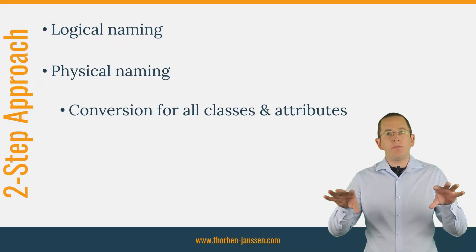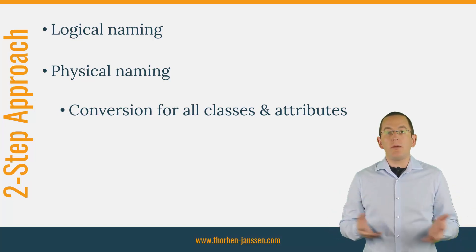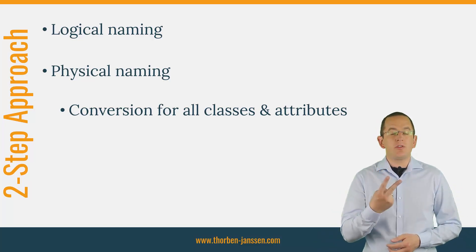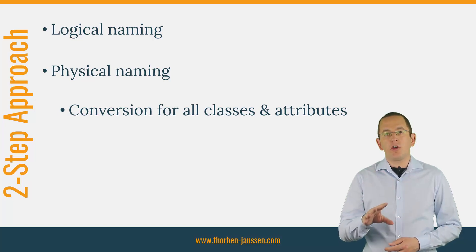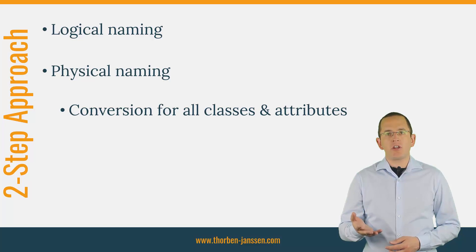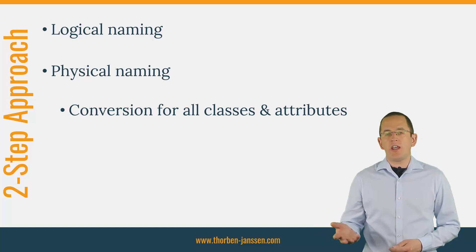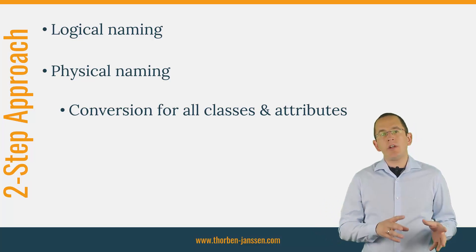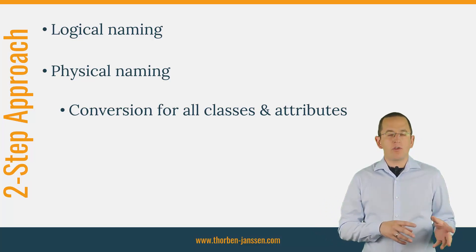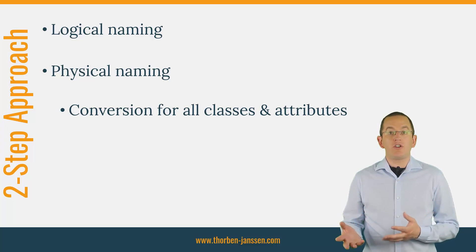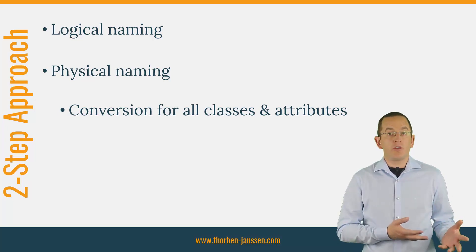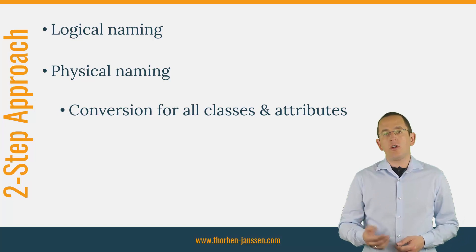Hibernate splits the mapping of the entity or attribute name to the table or column name into two steps. It first determines the logical name of an entity or attribute. You can explicitly set the logical name using the @Table and @Column annotations. If you don't do that, Hibernate will use one of its implicit naming strategies. It then maps the logical name to a physical name. By default, Hibernate uses the logical name as the physical name, but you can also use a physical naming strategy that maps the logical name to a physical one that follows your internal naming convention.